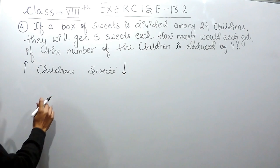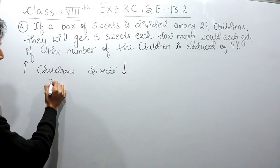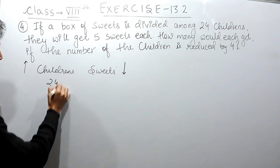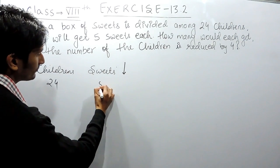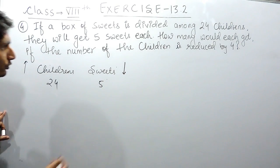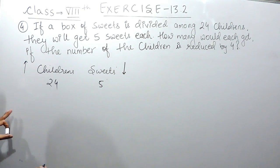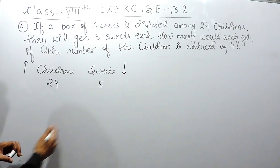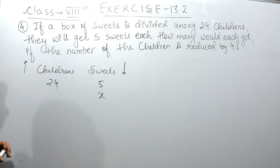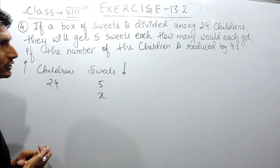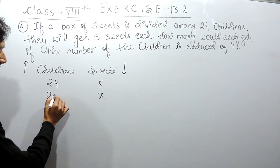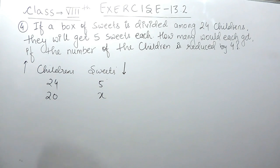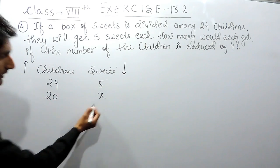It is given that 24 children get 5 sweets each. We have to find how many sweets each would get if the number of children is reduced by 4, making the new number of students 20. We need to find this unknown value.